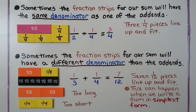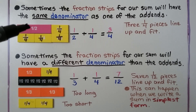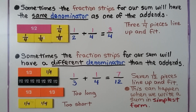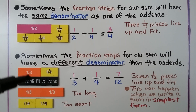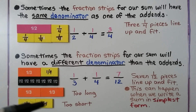Sometimes the fraction strips for our sum will have the same denominator as one of our addends. We have 1 half plus 1 fourth — it's equal to 3 fourths, and three 1-fourth pieces line up and fit. Sometimes the fraction strips for our sum will have a different denominator than the addends. We needed 7 one-twelfth pieces to equal 1 third plus 1 fourth. If we try using 1-third pieces, it's too long; if we try using 1-fourth pieces, it's too short. So 7 one-twelfth pieces line up and fit.